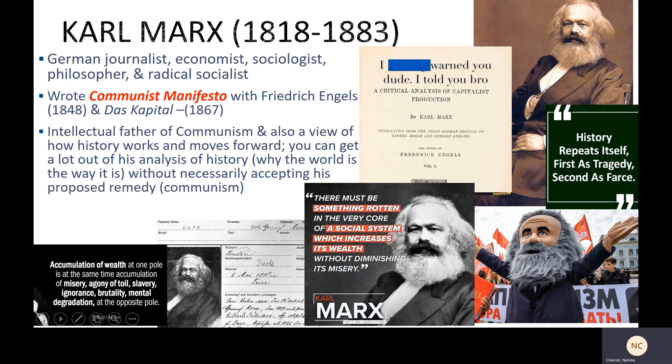In the end, Marx argued that capitalists were stealing from the workers by paying them less for their labor than they deserved. And since these capitalists would never voluntarily give up their power — because people tend not to do that — Marx argued that the workers needed to unite and violently overthrow the capitalist class.